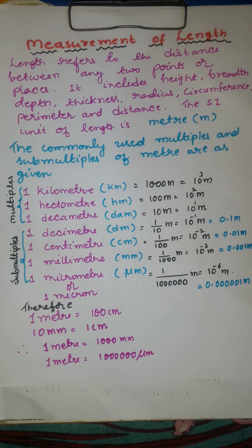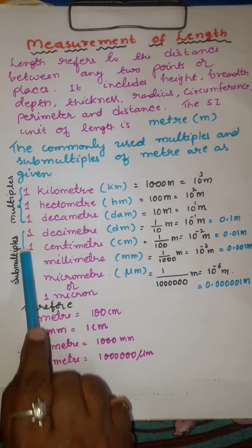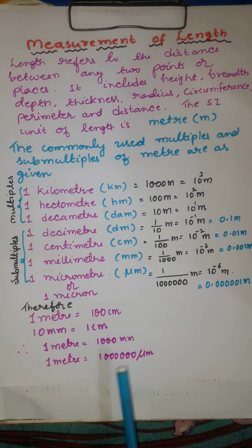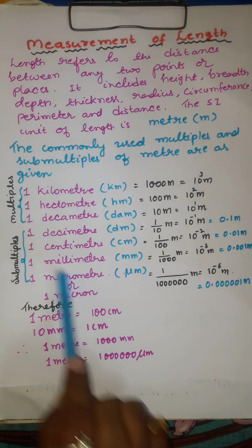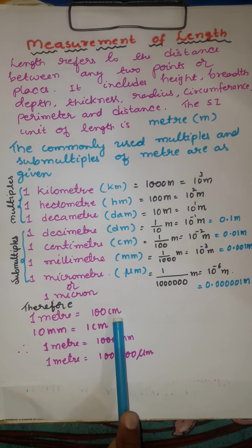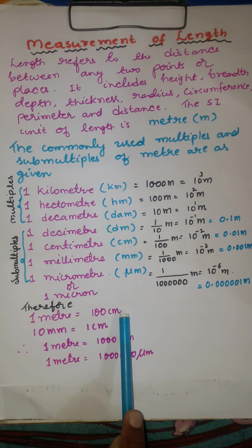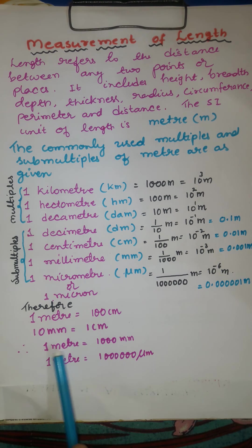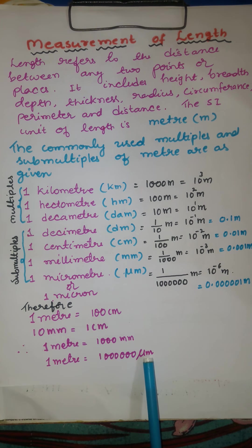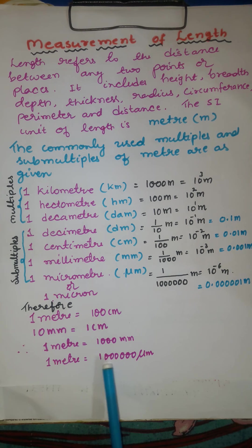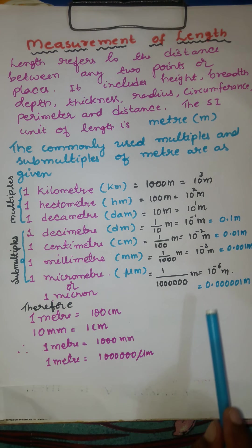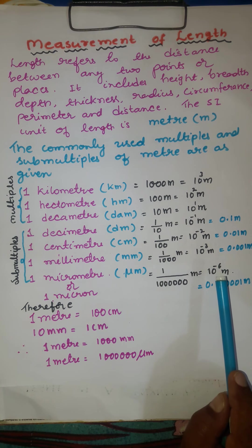These are the multiples and submultiples of meters. Key conversions to remember: 1 meter is equal to 100 centimeters; 10 millimeters is equal to 1 centimeter; 1 meter is equal to 1000 millimeters; and 1 meter is equal to 1 million micrometers. The unit micrometer is also called micron, meaning 10 to the power of minus 6 meter.